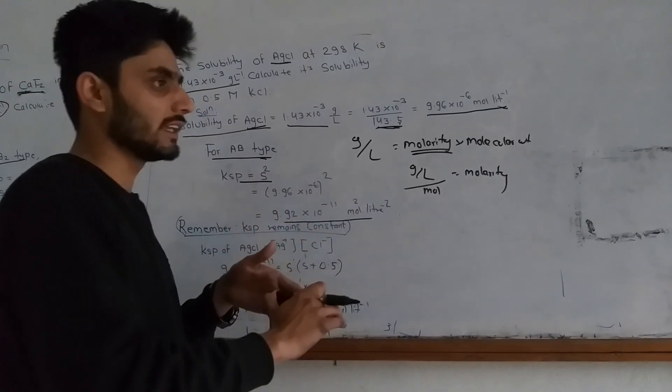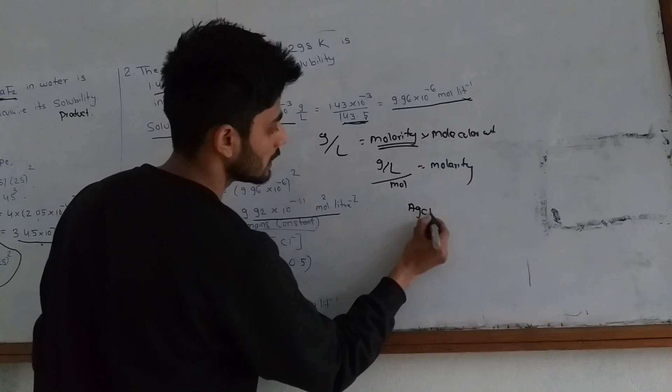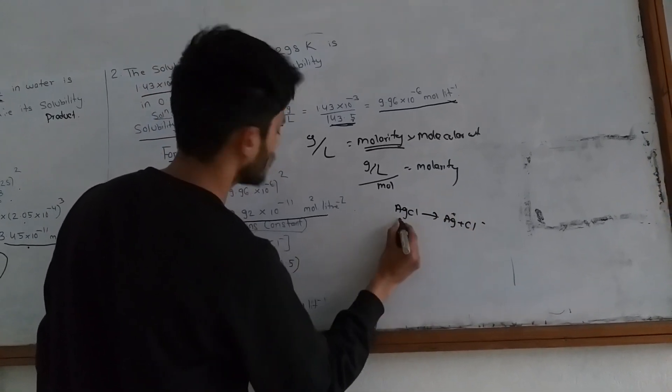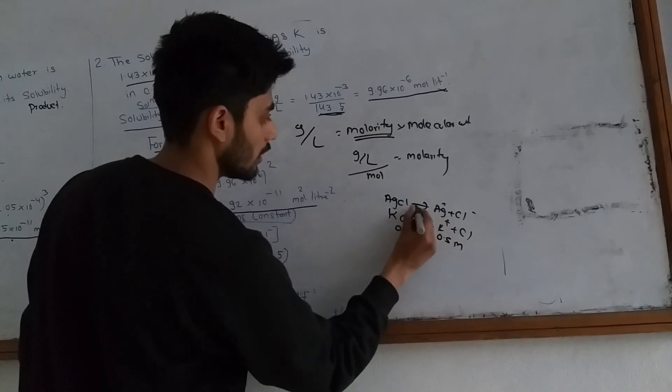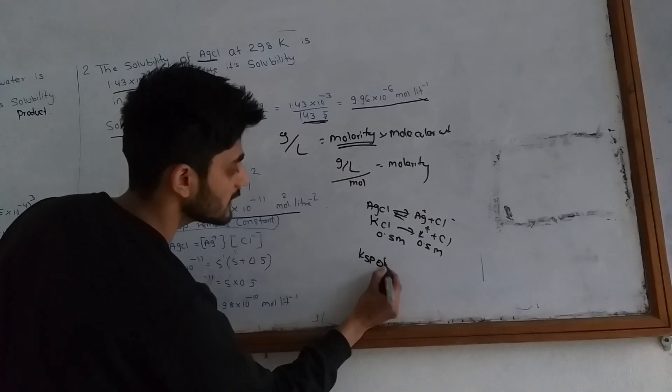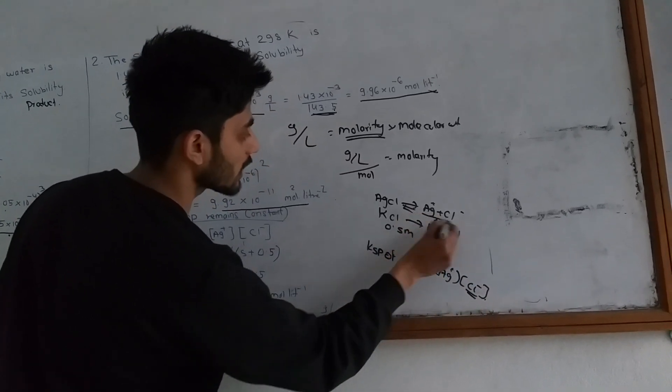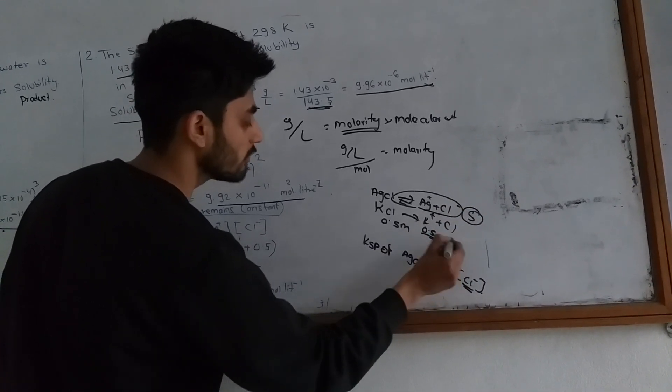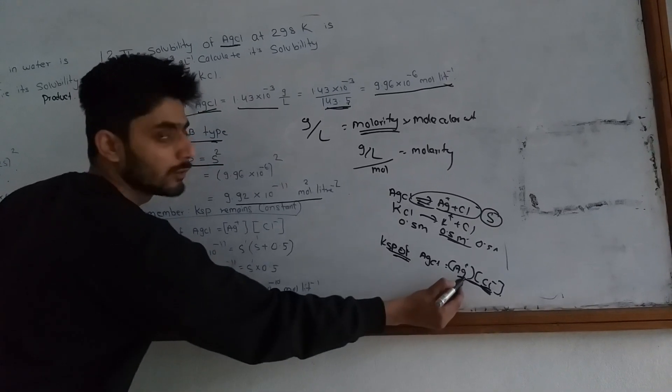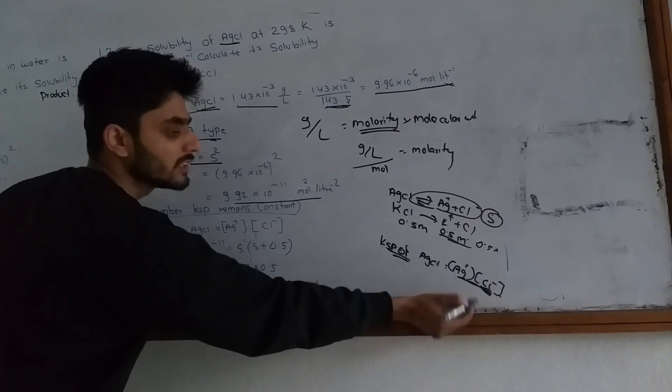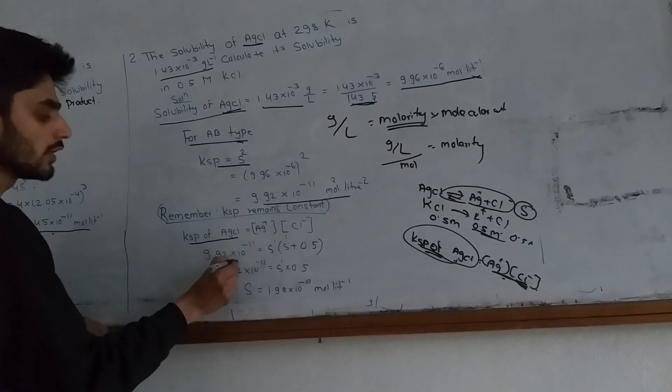So when temperature is constant, KSP is constant. This is the common ion effect. When KSP is constant and we have 0.5 molar KCl, the concentration of chloride ion affects solubility. Solubility is suppressed. This is the common ion effect - KSP remains constant.